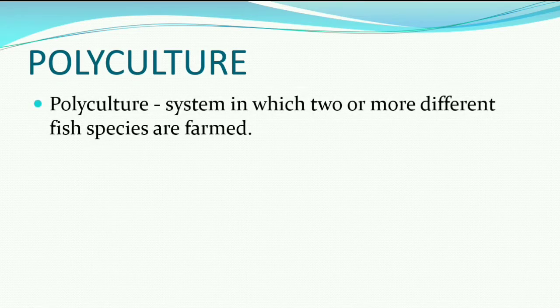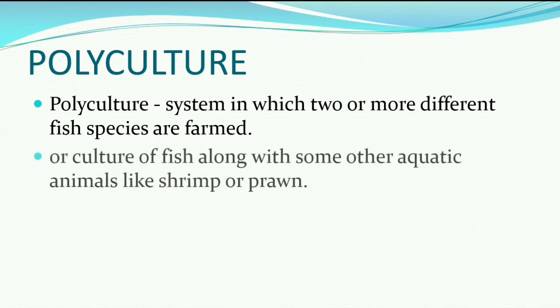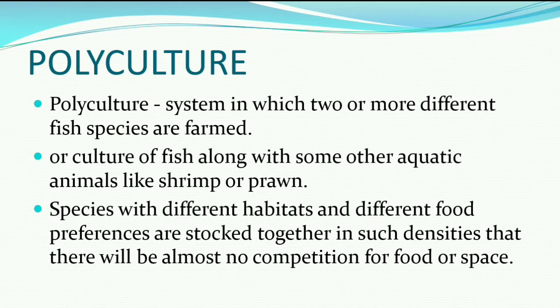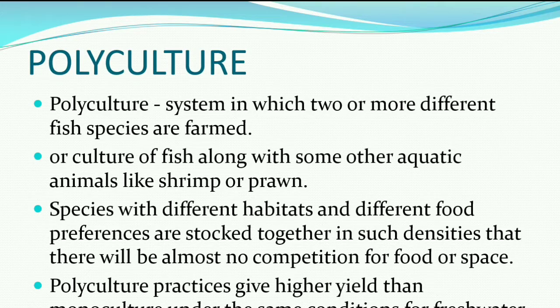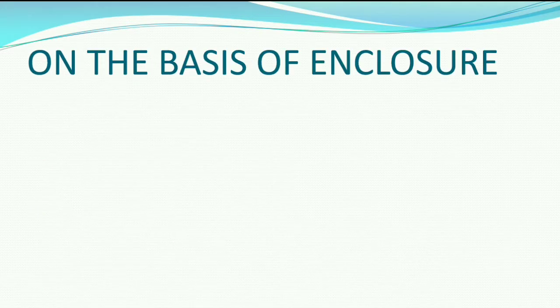Polyculture — where 'poly' means more than one — involves two or more different fish species cultured together in a single pond. Species with different habitats and different food preferences are stocked together at such density that there is almost no competition for food or space. Polyculture practice gives higher yield than monoculture under the same conditions for fresh water farming.